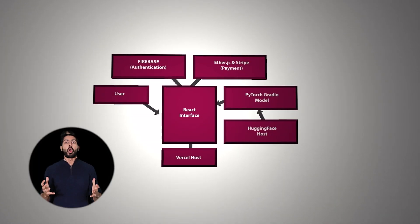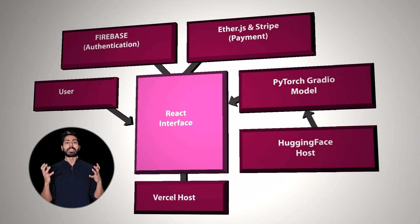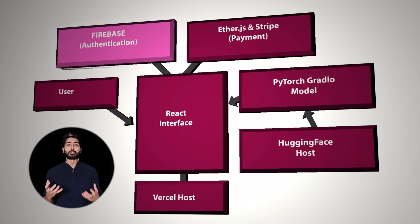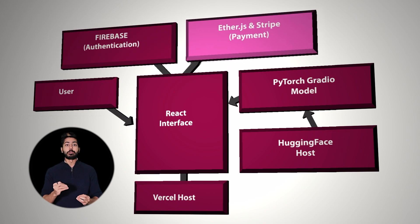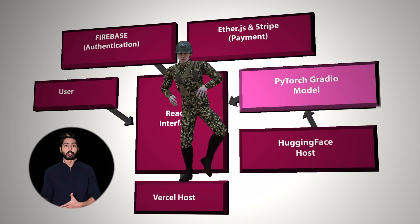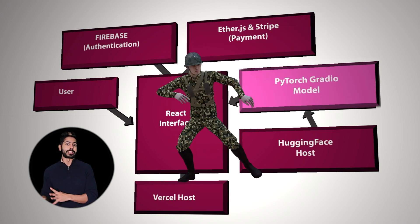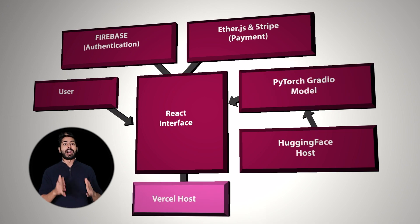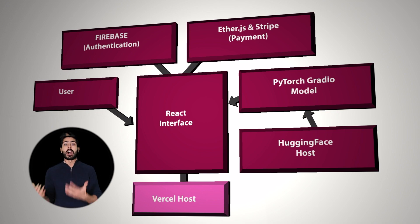Let's go over the app's architecture. Animusica is a web application written in React. It uses Firebase for user authentication. Once logged in, users can pay using either Stripe for fiat or Ethereum tokens with the ethers.js library. The video they upload is converted to anime using a pre-trained PyTorch model called AnimeGAN V2, served using Gradio, a simple interface for demoing deep learning models. The React app is hosted on Vercel, and the PyTorch code is currently hosted on Hugging Face.